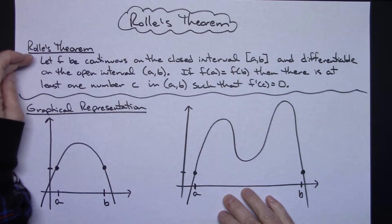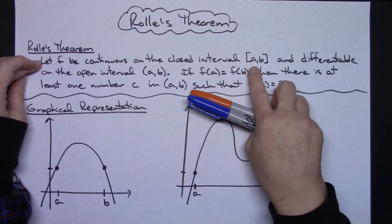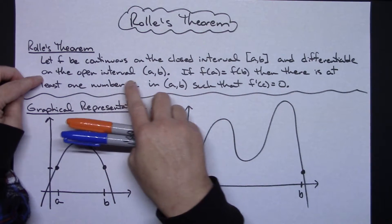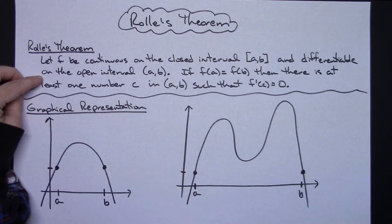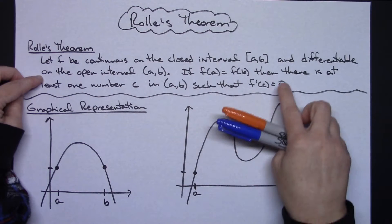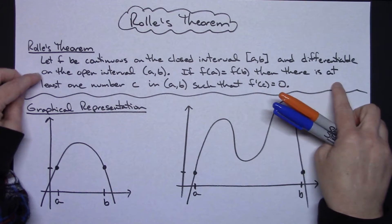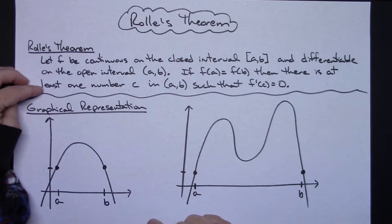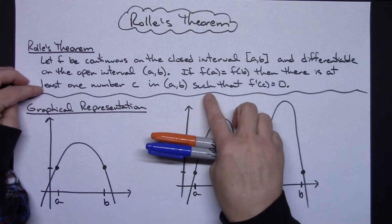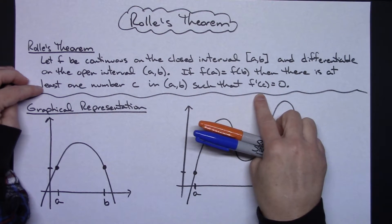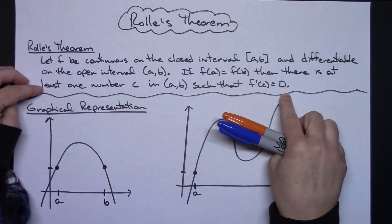Rolle's Theorem: We let F be continuous on the closed interval from A to B, and differentiable on the open interval from A to B. If F of A equals F of B, then there is at least one number C in the open interval from A to B such that the derivative at C is equal to zero.